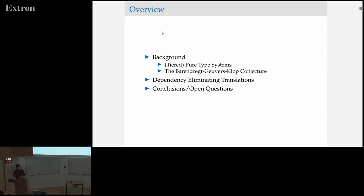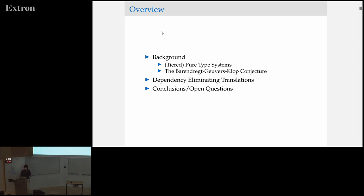I guess maybe 80% of you have seen some pure type systems in some setting and maybe seen a statement of the Barendregt-Geuvers-Klop conjecture, because there's just one of these big open questions in the air. Then I'll spend a little bit of time talking about dependency eliminating translations, which is the primary part of this work, and then go on to open questions.